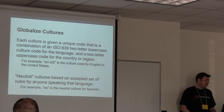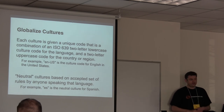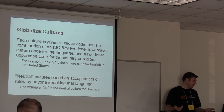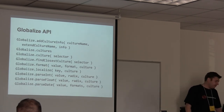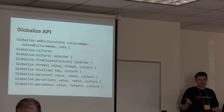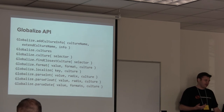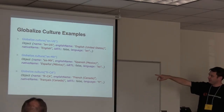Globalize has culture files using the two-letter ISO 639 code and the two-letter uppercase country code — like EN-US. You can also use neutral cultures based on accepted standards for anyone speaking that language, like just 'ES' for Spanish. Their API has functions for getting and setting cultures, finding the closest one, a format function that handles numbers and dates, a localize function for string translation tables, and some parsing utilities. Here you can see sample culture data for EN-US, ES-MX, and FR-CA, including native language names.